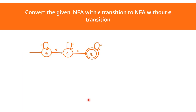So this is our question: convert the given NFA with epsilon transition to NFA without epsilon transition. We have states Q0, Q1, Q2, where Q2 is the final state. Q0 has a self-loop, Q1 has a self-loop, and Q2 has a self-loop. The input alphabet is 0, 1, 2.